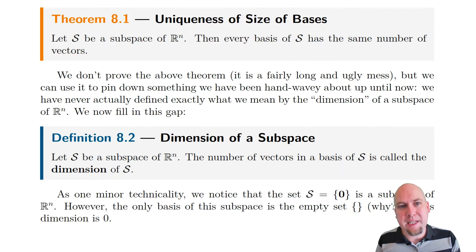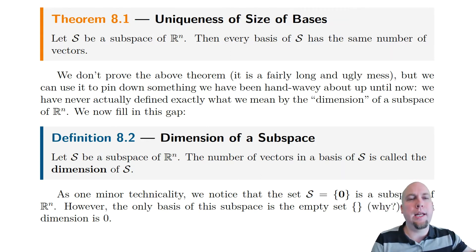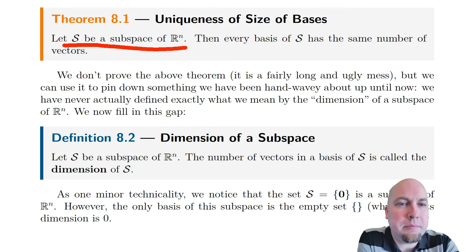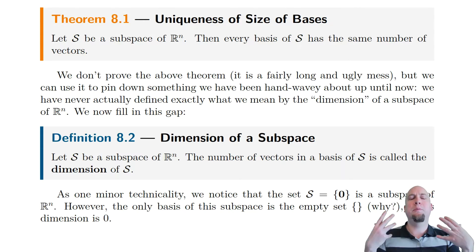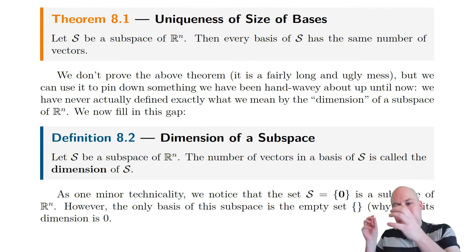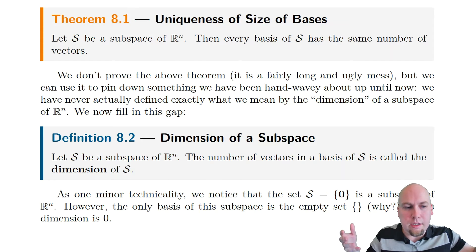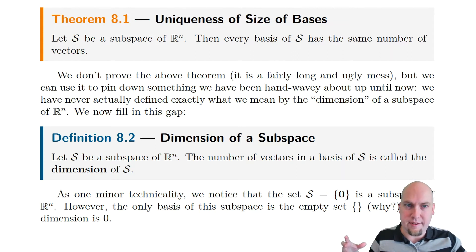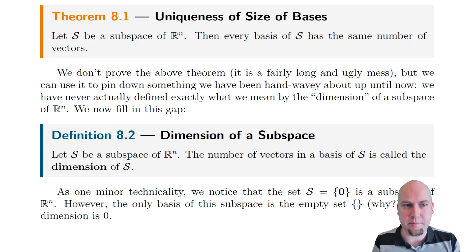In today's class, we're going to finally pin that down. Where this definition comes from is this theorem 8.1. We're just going to state this theorem — we're not actually going to prove it; the proof is in the textbook if you're curious. What this theorem says is that if you start off with any subspace of Rn, then every single basis of that subspace is going to have the same number of vectors in it. Even though a subspace has lots of different bases, they all have the same number of vectors. It's this uniqueness of the size of a basis that lets us define the dimension of the subspace.